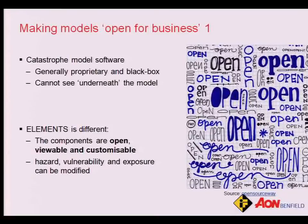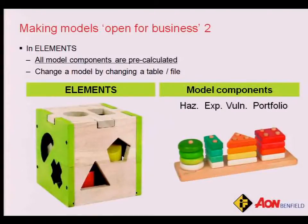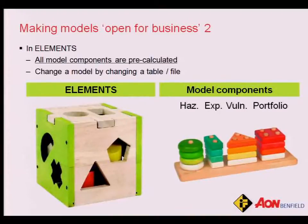Another point is trying to make our models open for business. In the past, and still to this day, some catastrophe modeling software is a kind of black box — you can't really see inside it. With Elements we like to say you can really see inside the model and see what's happening, so you can change components if you want to. The software is a bit like a shape sorter: you can change the hazard, the exposure, the vulnerability, and the portfolio information and see the effect that has. For example with vulnerability — if you don't know the type of buildings you're insuring, which happens quite a lot, you can make an assumption — maybe they're not made of stone, maybe they're reinforced concrete — run the model again and get new results.